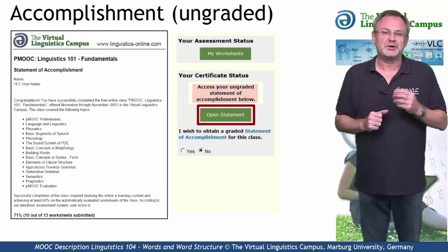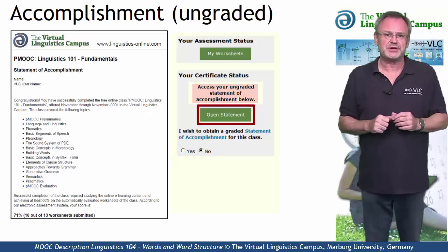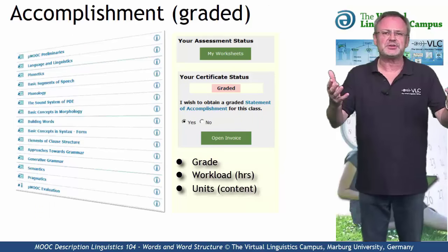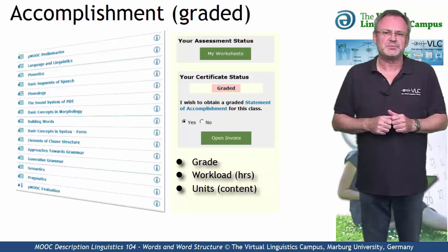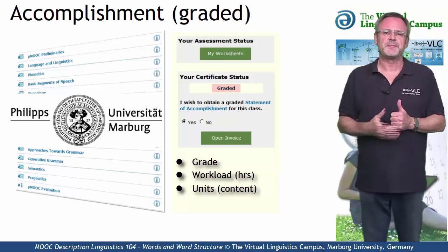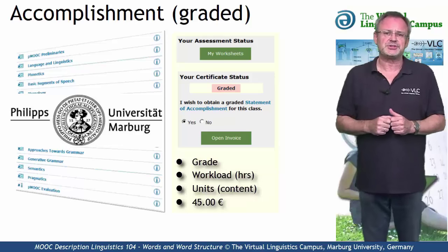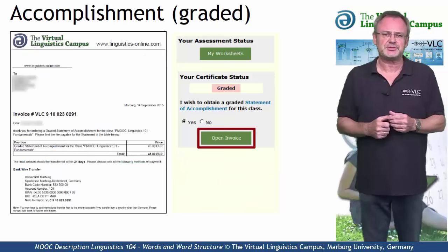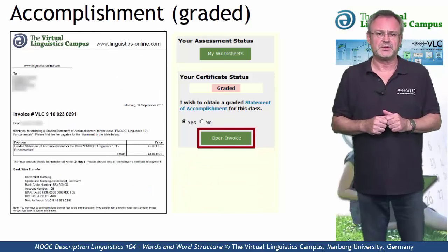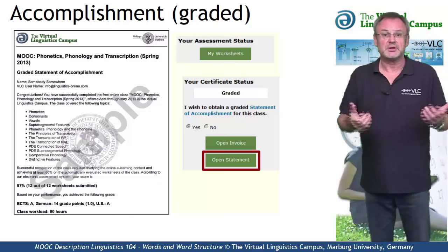If you want to obtain a graded Statement of Accomplishment, select Yes down here. This most advanced option of certification includes your precise grade, the workload in hours, and a complete list of all the tasks you successfully submitted. This graded Statement of Accomplishment is issued by Marburg University in conjunction with the Virtual Linguistics Campus, and it involves a fee of currently 45 euros. Once you have satisfied the conditions and decided to obtain such a certificate, you first have to open the invoice and transfer the money to Marburg University. And once your payment has been accepted, you can download your personal graded Statement of Accomplishment via mouse click.